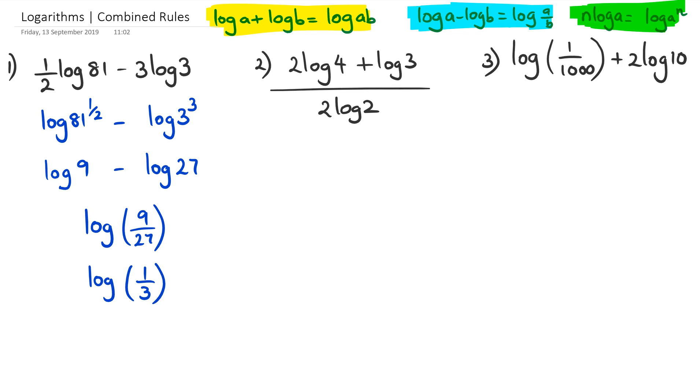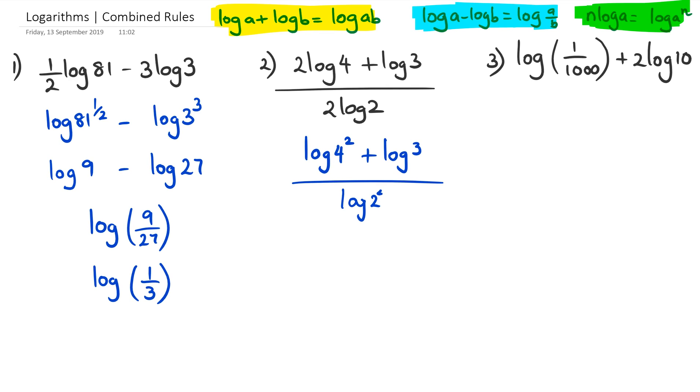Now we go to number two. We've got 2log4, so I've got to use the green log formula. It's going to be written as log4² plus log3—that just stays as it is—divided by 2log2, which becomes log2². Once we get that, we have log4². Log4² is 16, plus log3, divided by log2², which equals 4.